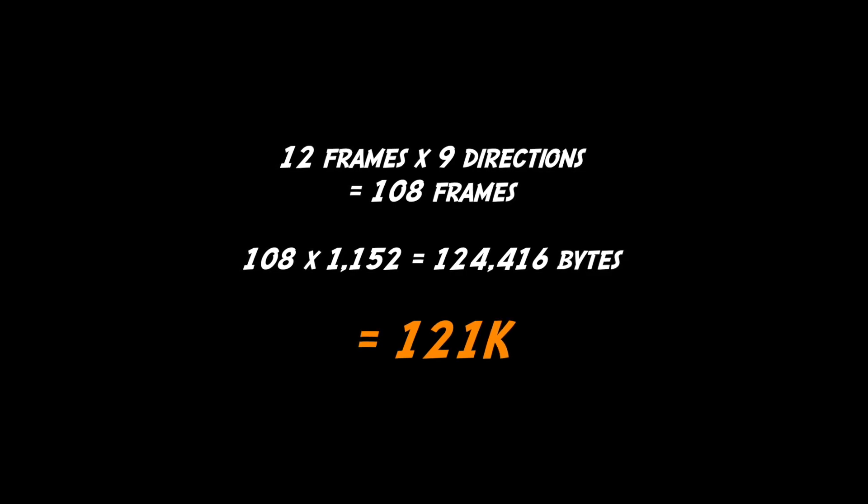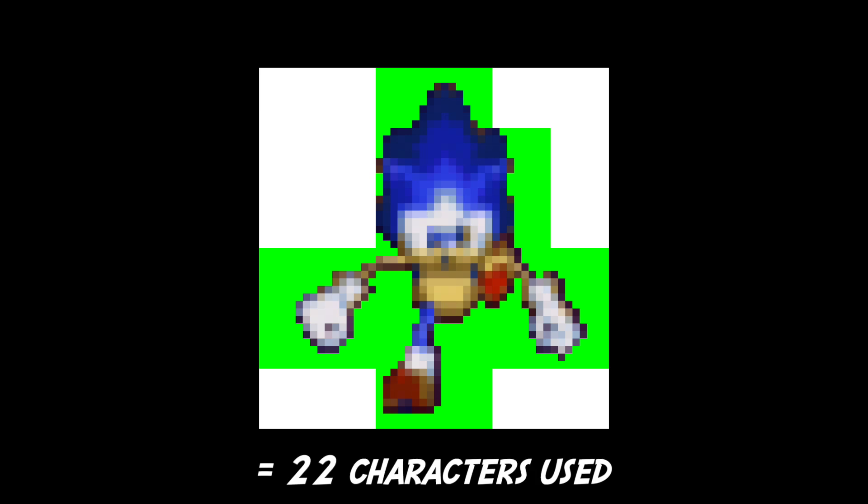So let's have a look at exactly how the graphic is displayed on the screen to see if we can find some savings there. The Sega Genesis can draw sprites in any size up to 4 characters square, so for this frame of animation it uses 4 sprites like this. But you can see that lots of the individual characters contained within the sprites are blank. Highlighting in green only the characters that have graphic data in them, we can see we only really need to draw 22 characters.